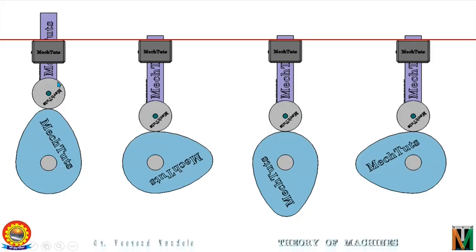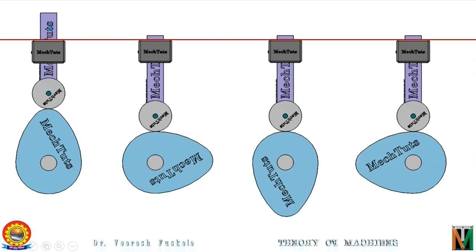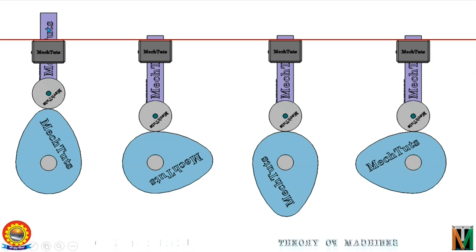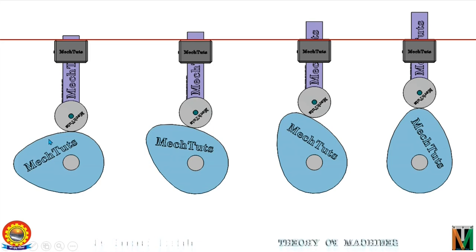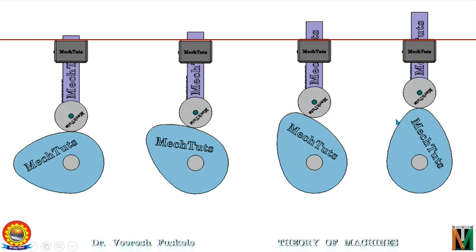These figures show the position of the follower in various extreme positions of the cam. This is the topmost position of the follower and this is the bottommost position of the follower, so this distance is the stroke of the follower. As the cam is rotating, according to the profile of the cam the follower is moving upwards — this is known as the rise of the follower.